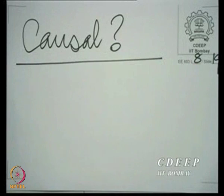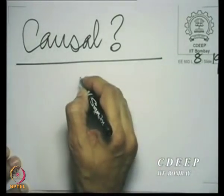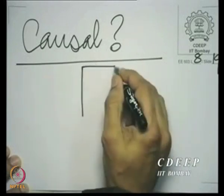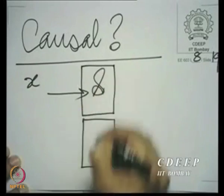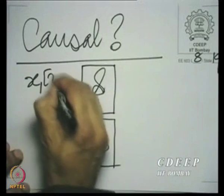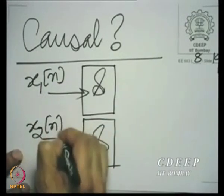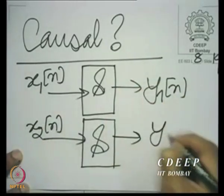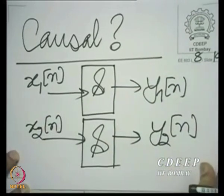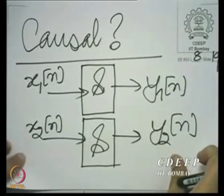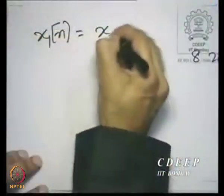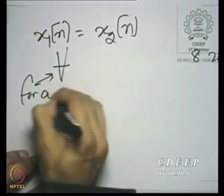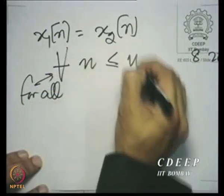We say a system is causal if the following happens. You perform two experiments on the system with two inputs. You have a system S — not necessarily LSI. You give it an input x1[n] and an input x2[n] and record the two corresponding outputs. The only catch is that x1 and x2 are identical up to some n equal to n0. That is, x1[n] is equal to x2[n] for all n less than or equal to n0, for some integer n0.